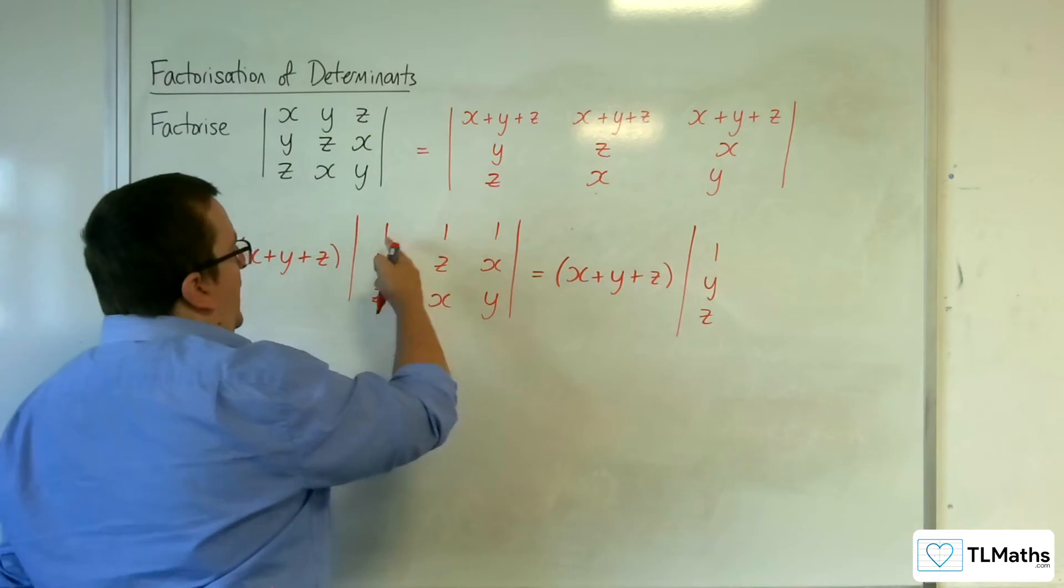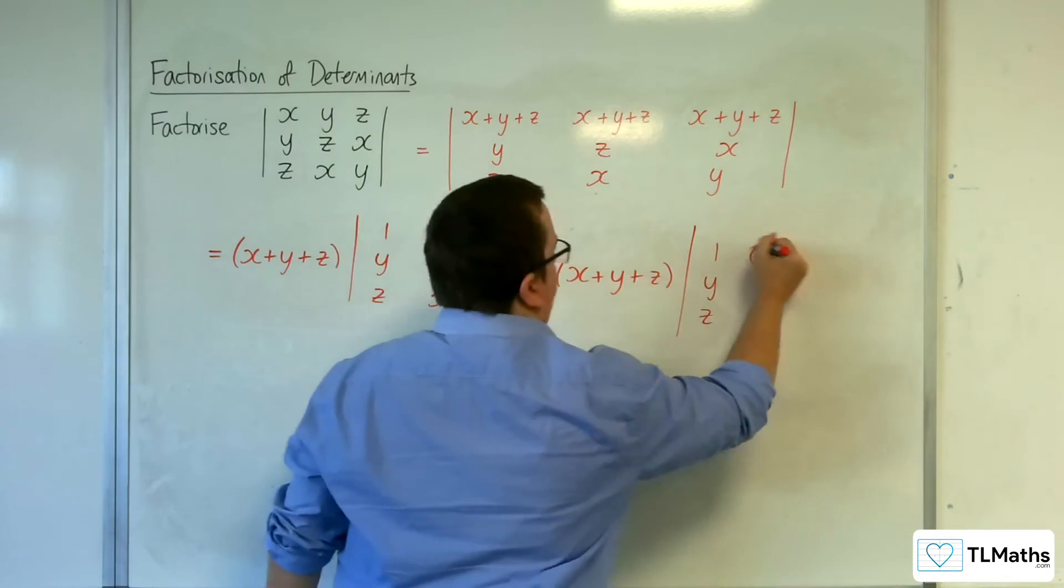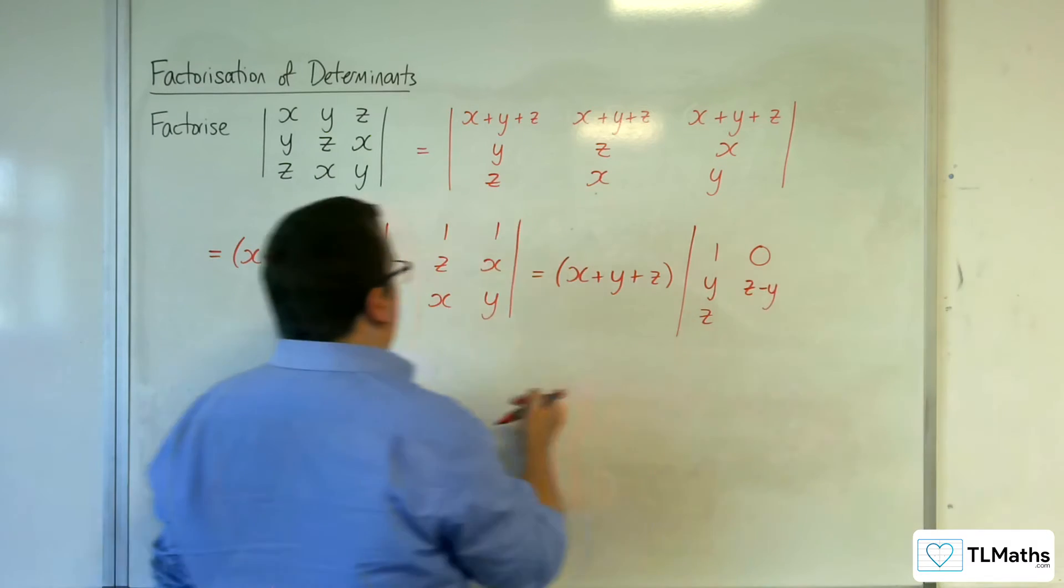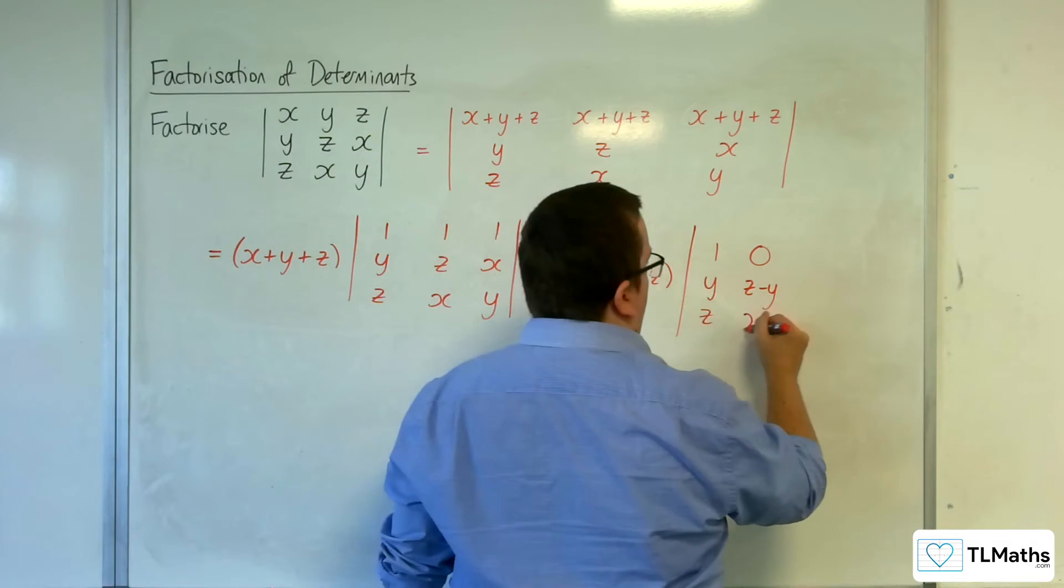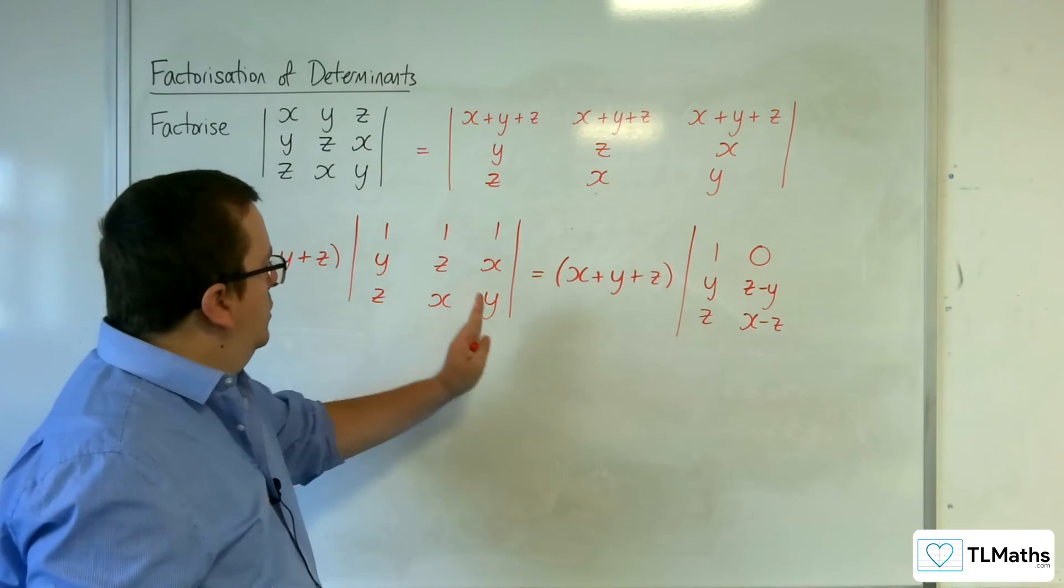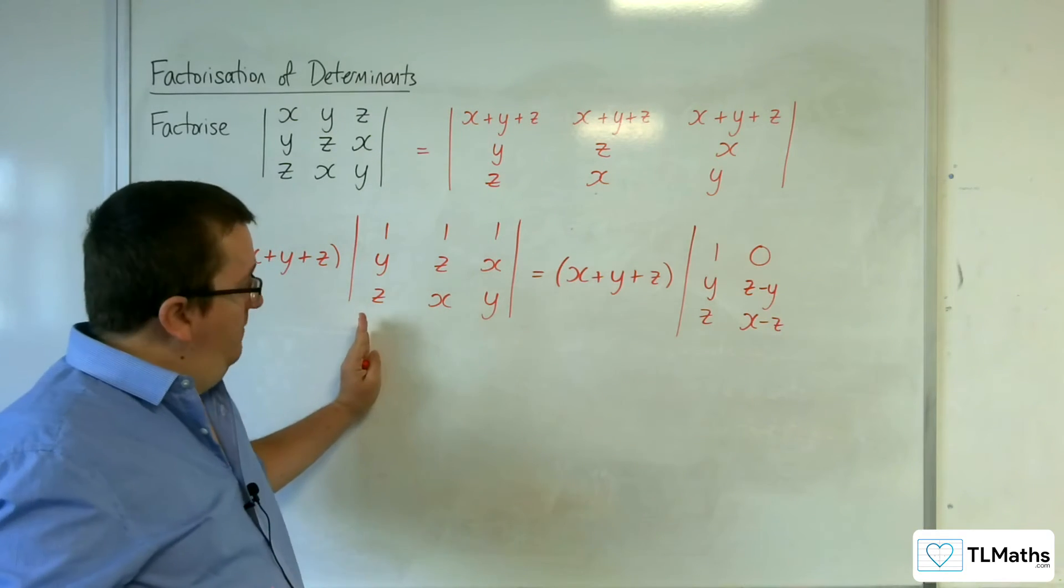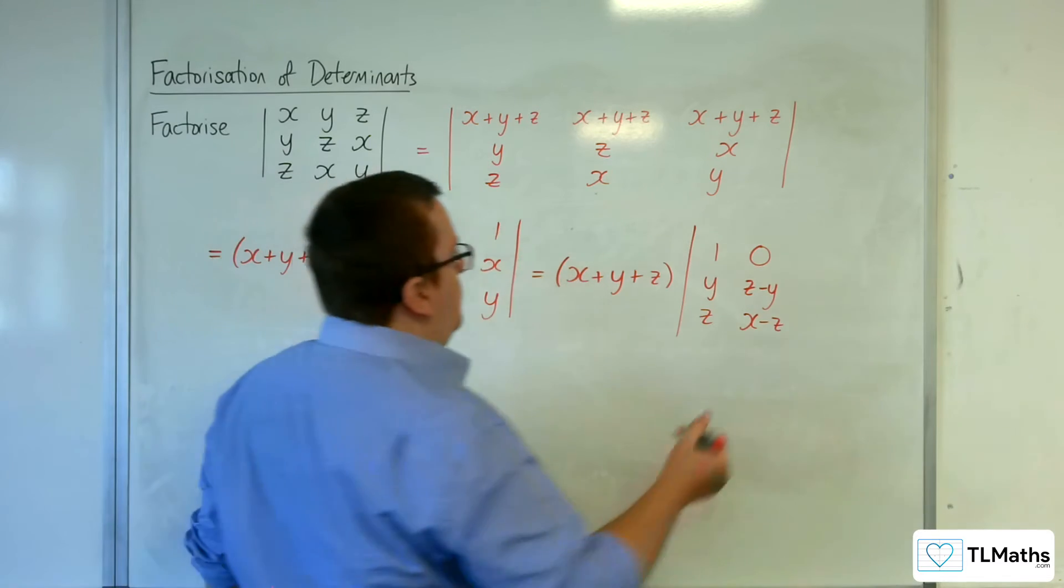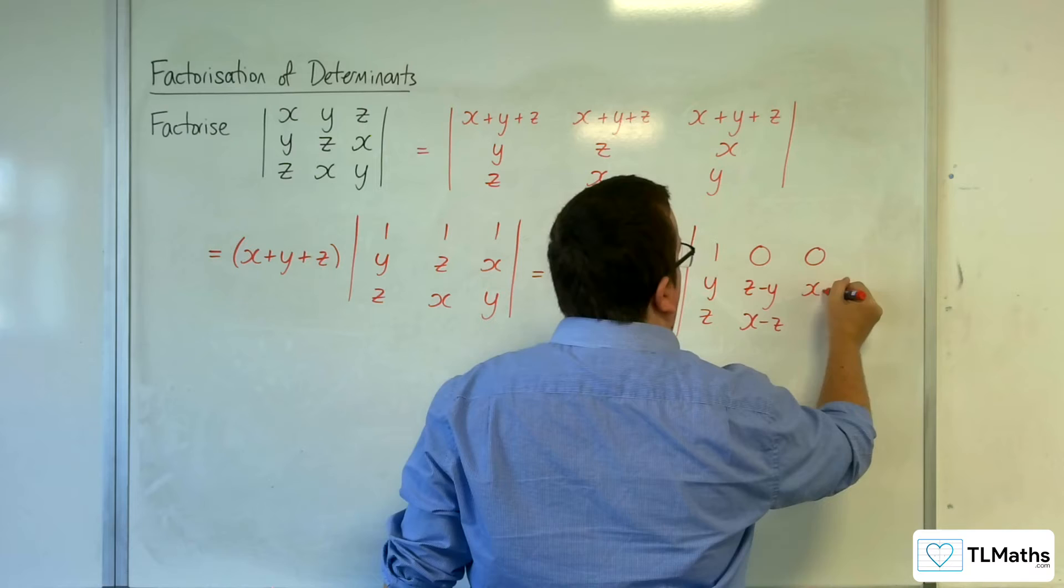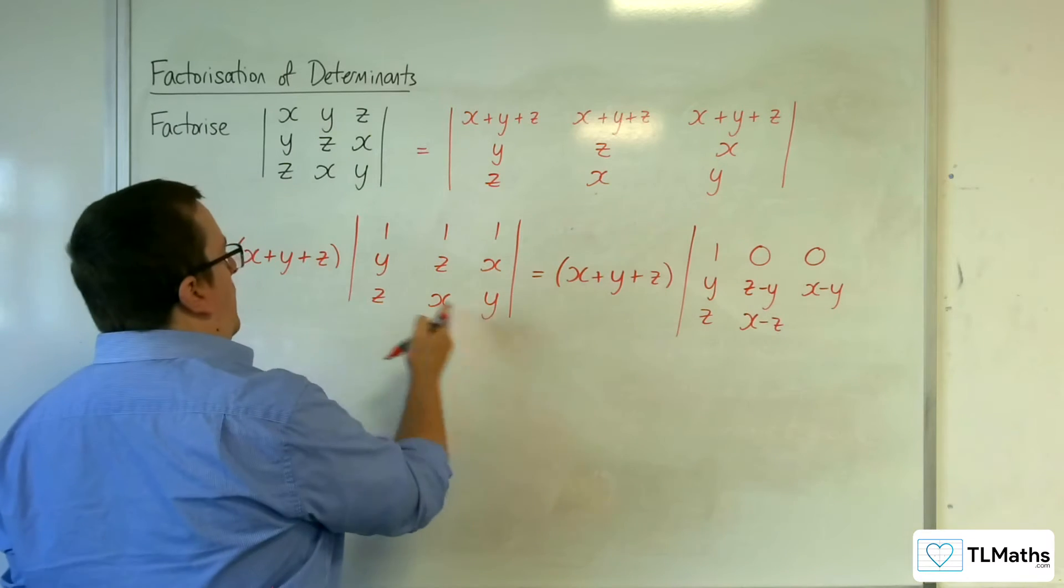And I'm going to get 1 take away 1, which is 0. Z take away y. And x take away z. And I'm also going to do column 3 take away column 1. So I've got 1 take away 1, which is 0. x take away y. And y take away z.